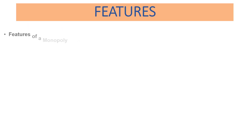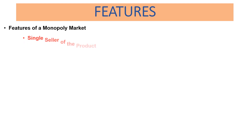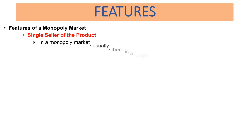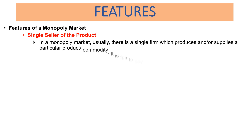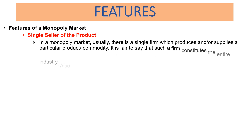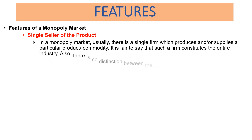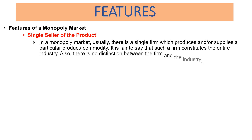Features of a monopoly market. The first one is single seller of the product. In a monopoly market, there is usually a single firm which produces and/or supplies a particular product or commodity. It is fair to say that such a firm constitutes the entire industry. Also, there is no distinction between the firm and the industry.